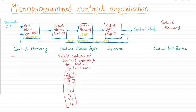Next is control memory. Control memory is a ROM — read-only memory. Once the control unit is designed and the processor is manufactured, all the details about each instruction are stored into the control memory. So every time we want to execute an instruction, we retrieve the sequence of micro instructions from this read-only memory.